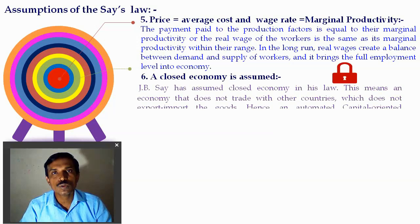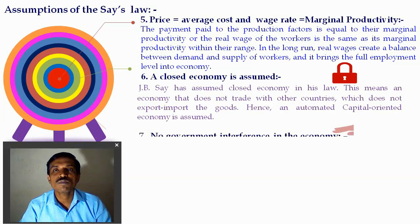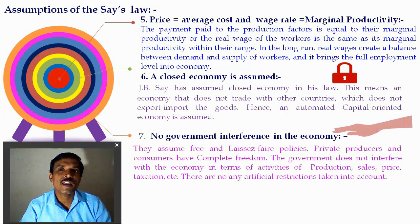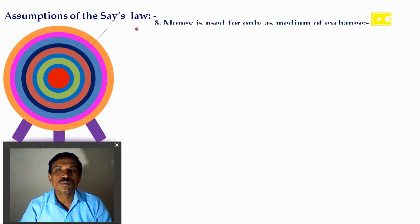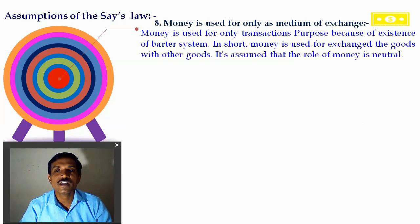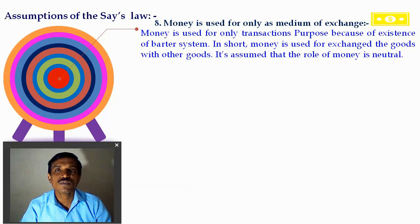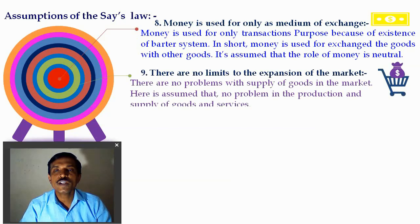The next assumption is the closed economy. According to J.B. Say, there is no international transaction between countries — no exports or imports. The assumption of no government intervention means the government does not play any role in the economy; if the economy creates employment on its own, there is no need for government intervention. Additionally, money is used only as a medium of exchange. Classical economists think money is used only for transaction purposes, with no other functions like store of value or transfer of ownership considered. Money is used only as a medium of exchange, and there are no limitations to the expansion of the market.